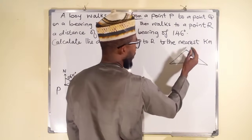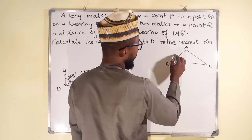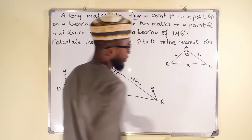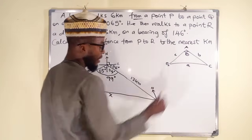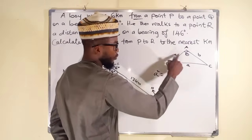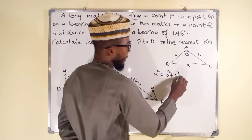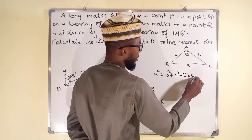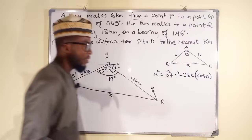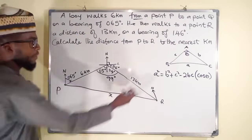The cosine rule states: if you have a triangle with sides a, b, and c, and the angle theta is between sides b and c, then a squared equals b squared plus c squared minus 2 times b times c multiplied by cos theta. Here, a corresponds to X, the side we are looking for, so we can apply this formula.